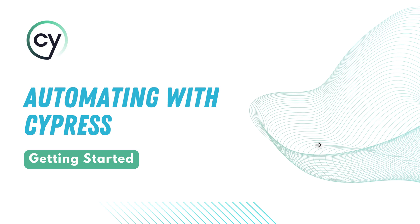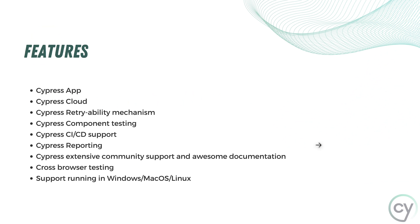Cypress is one of the most interesting tools which has so many different features that not many automation testing tools in the market really offer. Most importantly, Cypress is mostly free with all the features it offers — including Cypress app, Cypress cloud, retryability mechanism, component testing, CI/CD support, reporting, cross-browser testing, and running on multiple machines. The only place Cypress really makes money is towards cloud functionalities.